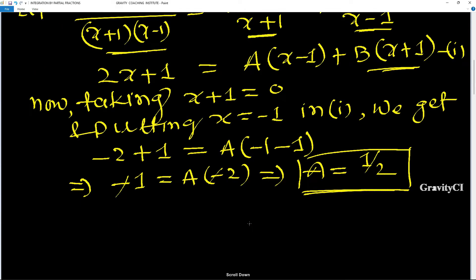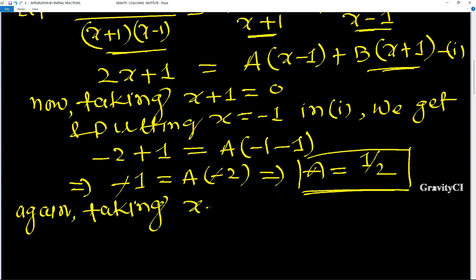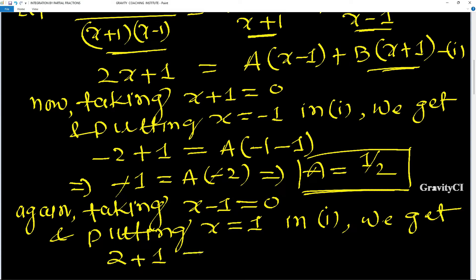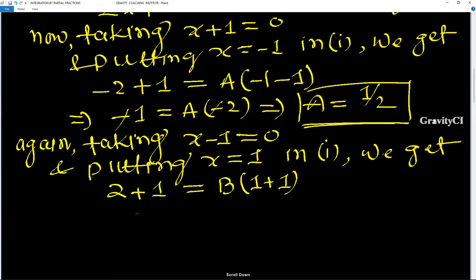Taking x - 1 = 0, so x = 1, and putting x = 1 in equation (1): 2 + 1 = B(1 + 1), so 3 = B × 2, which implies b = 3/2.